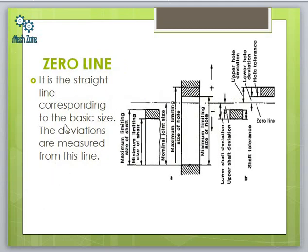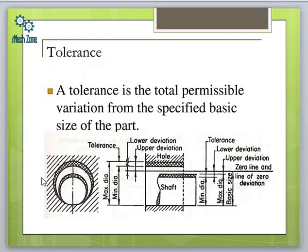The zero line is the horizontal datum from which all deviations are measured — either upper or lower deviation. All upper and lower deviations are measured with reference to this zero line, making it quite important. Tolerance is defined as the difference between the upper limit and the lower limit, and is the maximum permissible variation that can be given to the dimension of any component. It is also defined as the permissible variation from the specified basic size.